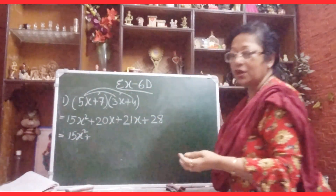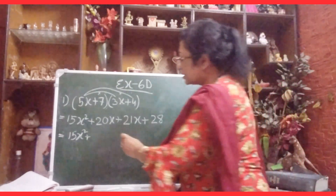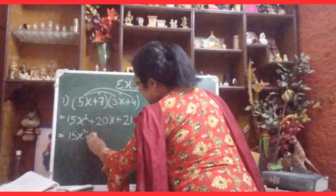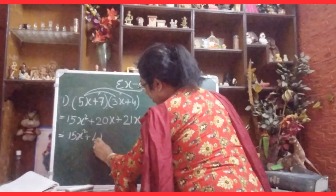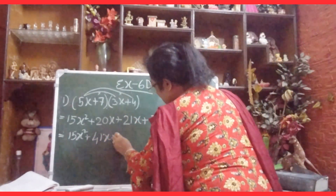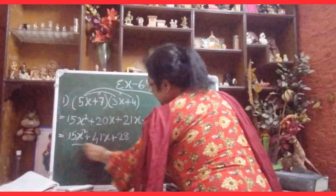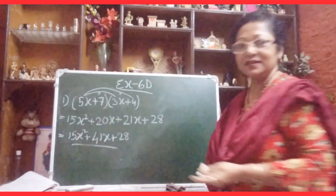Adding like terms, 20x plus 21x equals 41x. So the final answer is 15x squared plus 41x plus 28.